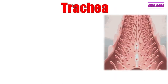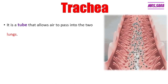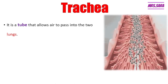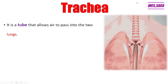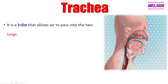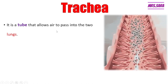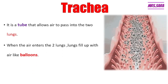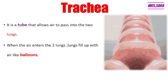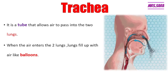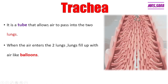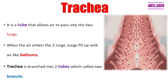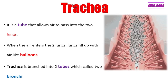After the pharynx, we have the trachea. The trachea is a tube that allows the air to pass into the two lungs, taking the air from the pharynx to the lungs. When the air enters the two lungs, the lungs fill up with air like balloons.